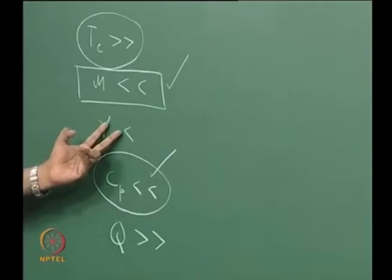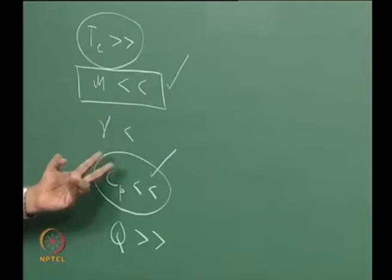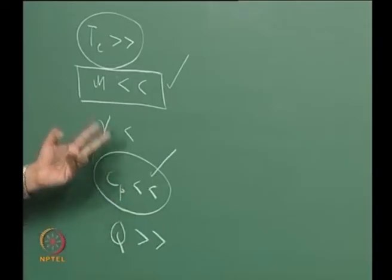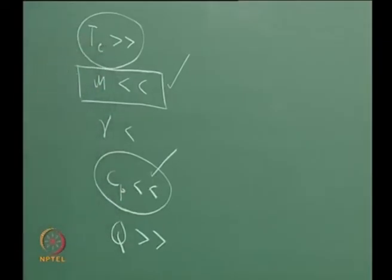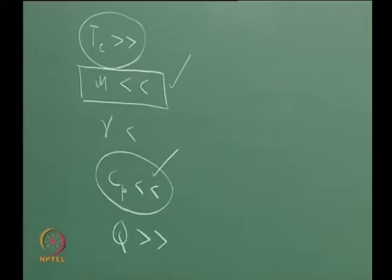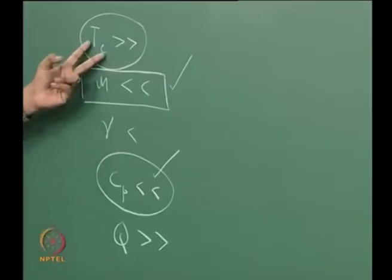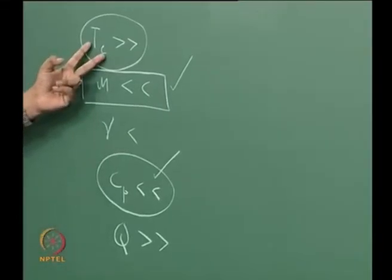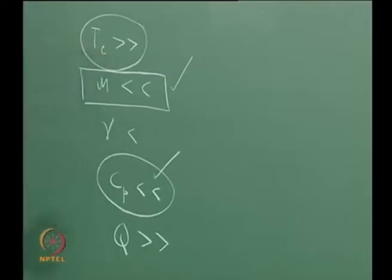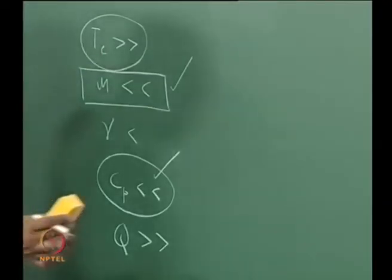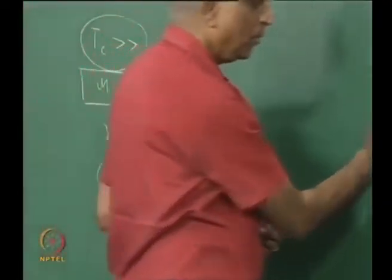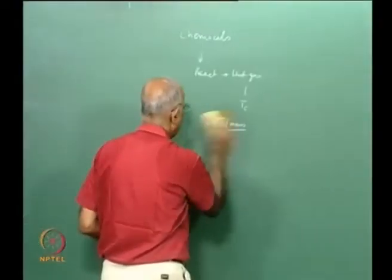So gamma decreases as molecular complexity increases — but for Cp to be small, we want simple gases, which is the opposite. Similarly, for low molecular mass we want simple product gases. The gamma requirement is contrary to the Cp and molecular mass requirements. However, since gamma is not very sensitive in nozzle theory, we give it less importance. We are left with heat release Q as the key parameter for determining Tc.